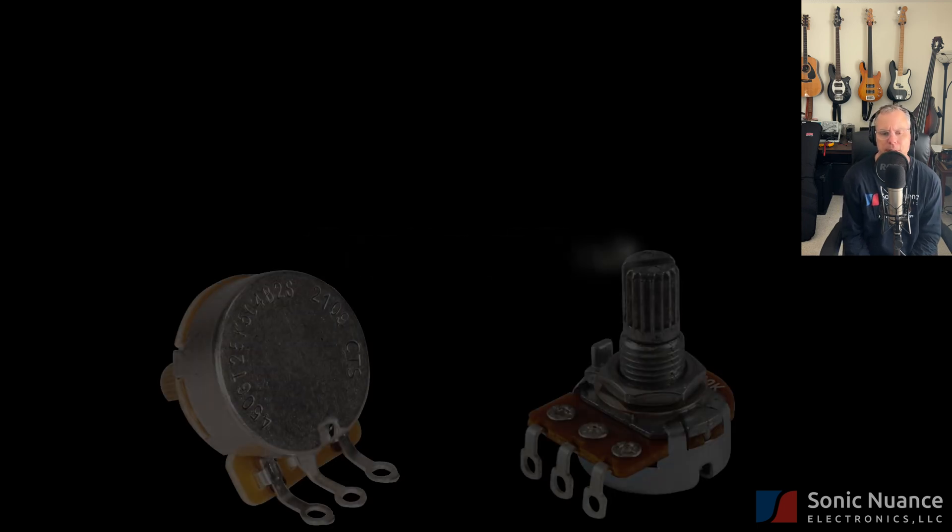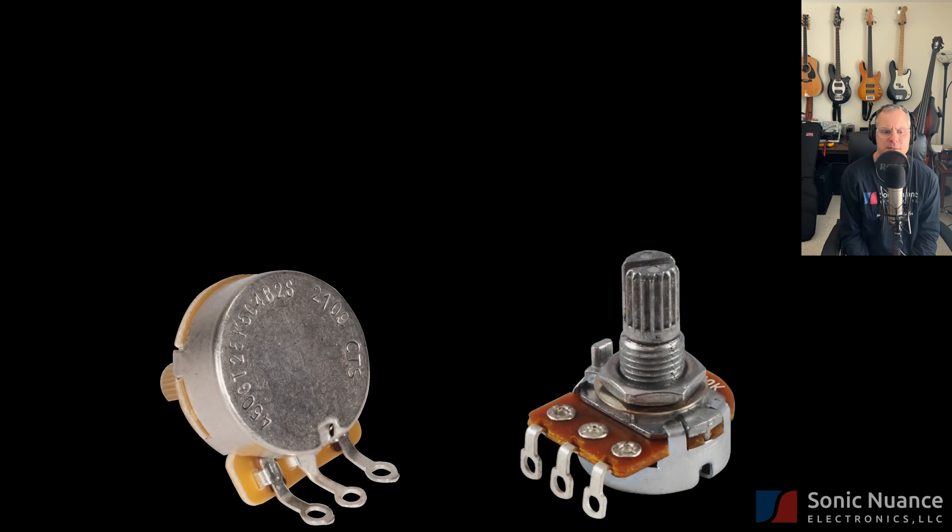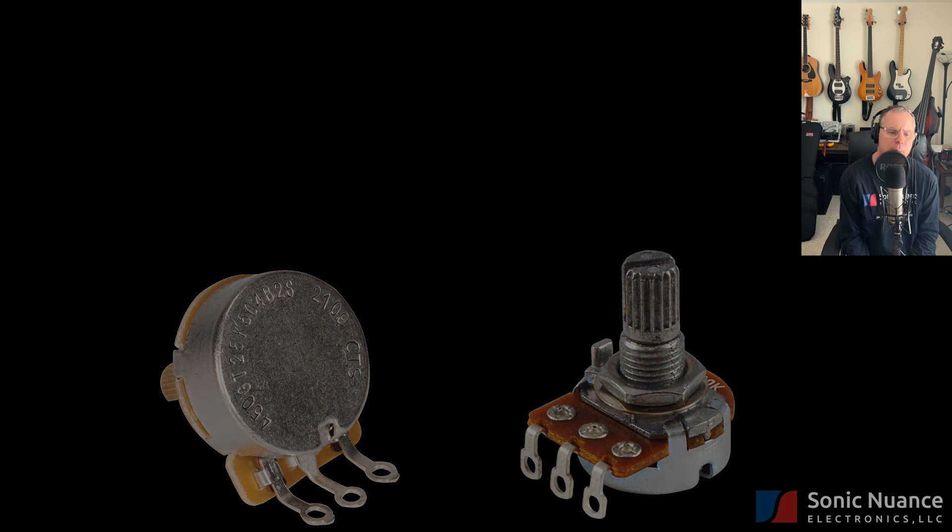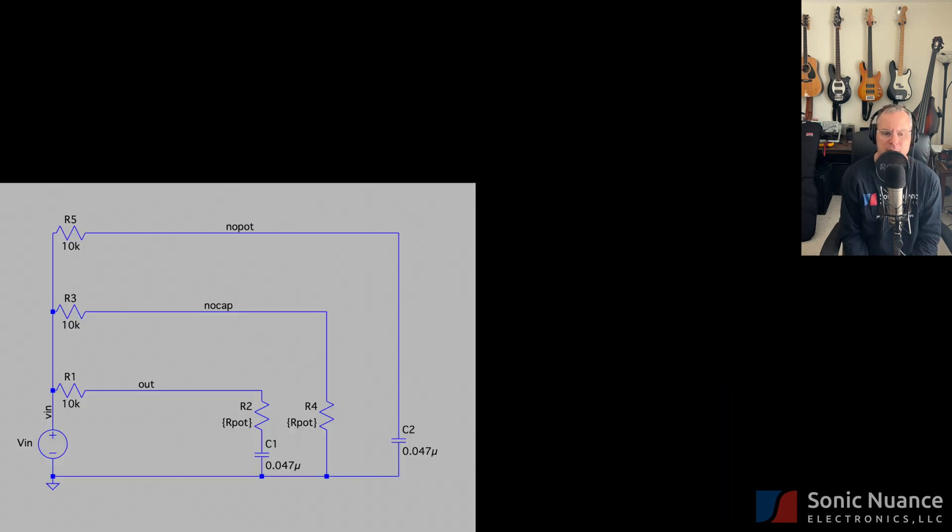To give the musician more control of the tone circuit than a switch can provide, we need a variable component. We'll use the pot just like in our volume control video. To understand the influence the pot has on the tone circuit, let's use the following circuit to analyze the effect. In this schematic, the circuit consists of an ideal voltage source and 3 independent sections.